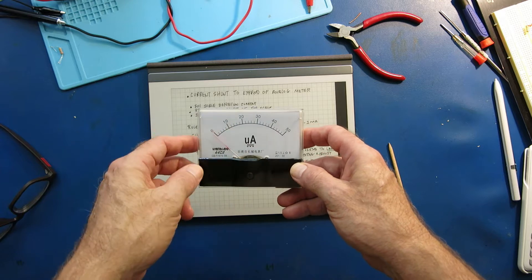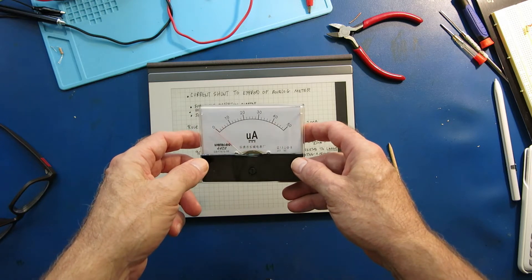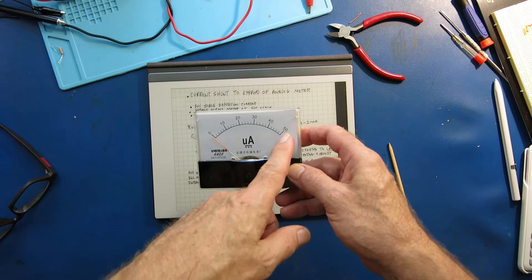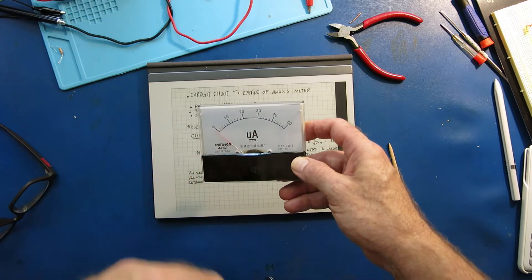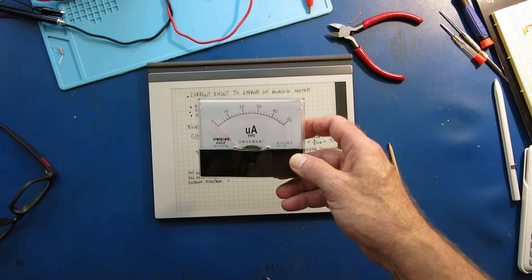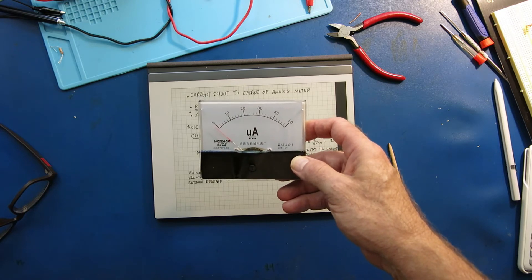Here's a 50 microamp full-scale analog display. I want to modify that to read 250 milliamps full-scale so I can have it on the bench to hook up to circuits and monitor the current. So let's see how we do that.